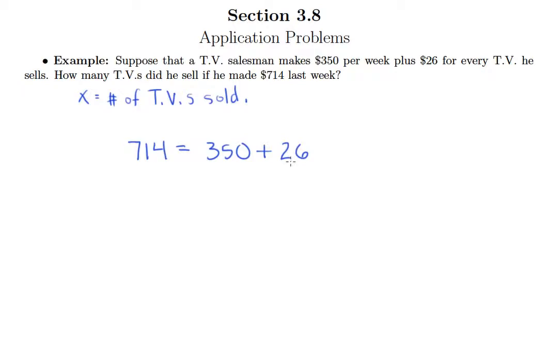So that means he gets $26 one time for selling one TV, two times for selling two, eight times for selling eight and so on. So in other words, what we'll do here is multiply 26 by the number of televisions.